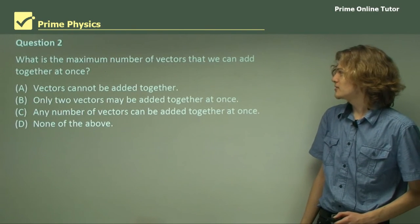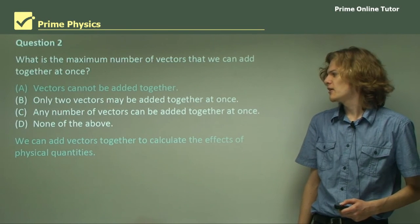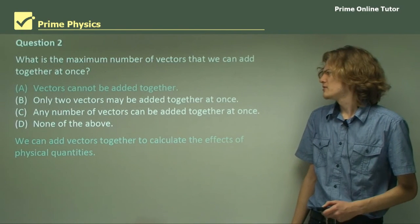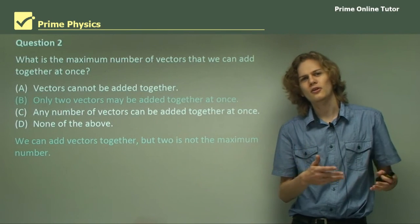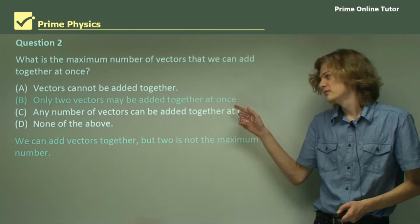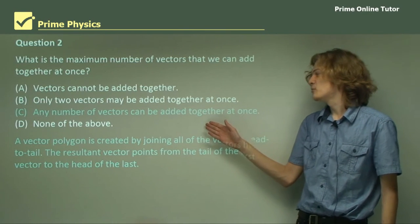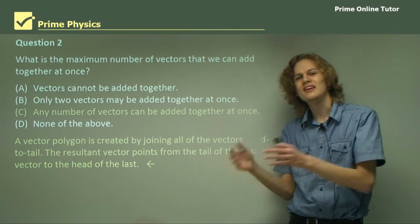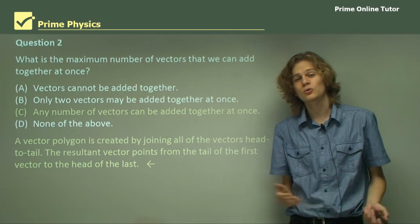Question 2: What is the maximum number of vectors that we can add together at once? Option A: vectors cannot be added together — that sounds wrong, since we discovered in this section how to add vectors. Option B: only two vectors may be added together at once — close, but there was also a part where we added more than two, so this can't be right. The correct answer is C: any number of vectors can be added together at once, because we can simply join all subsequent vectors head to tail and find the resultant vector — a vector polygon.